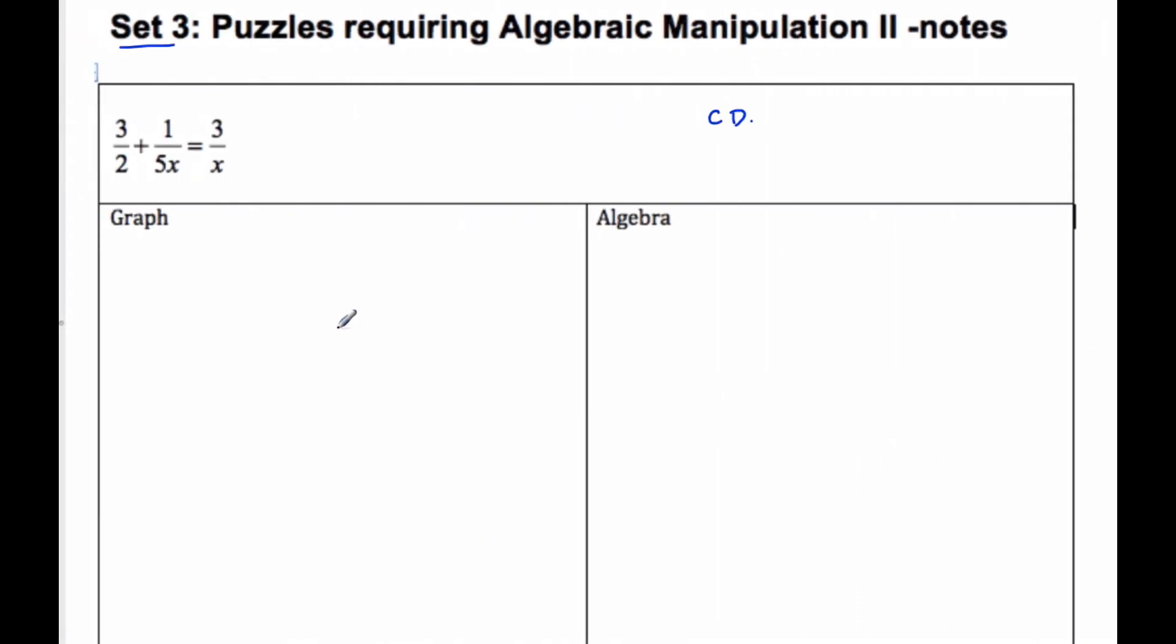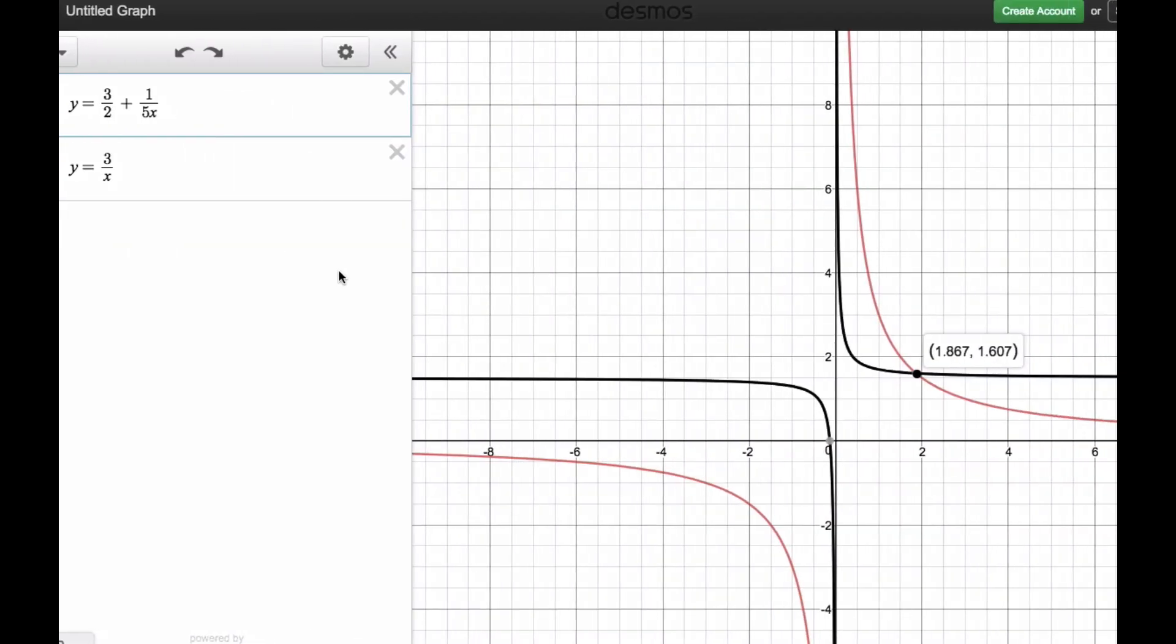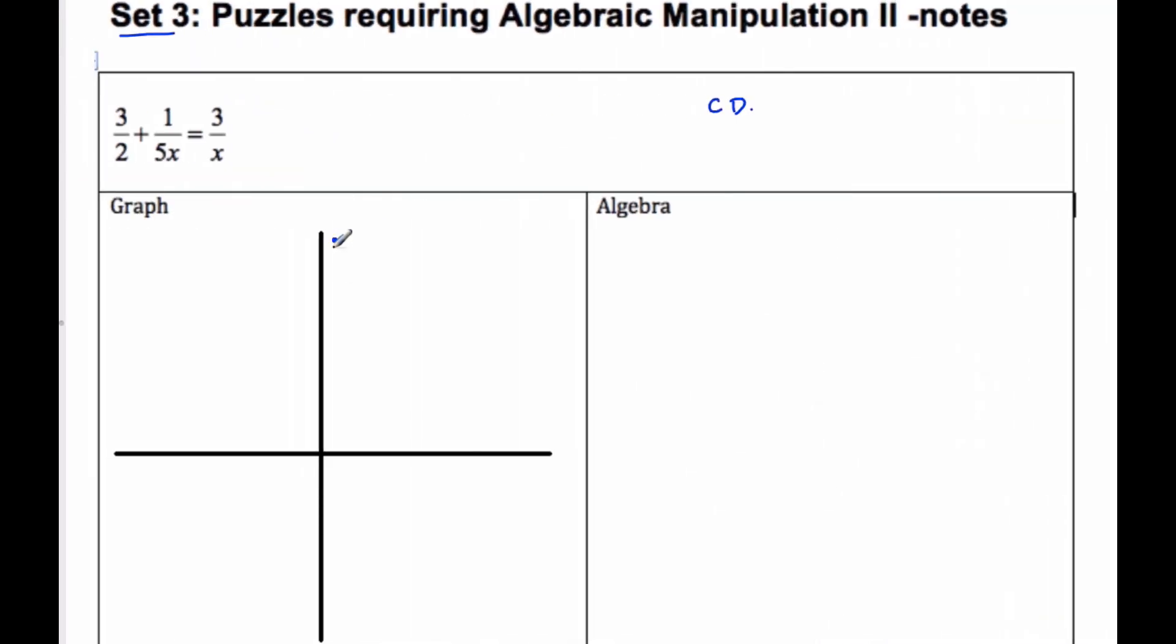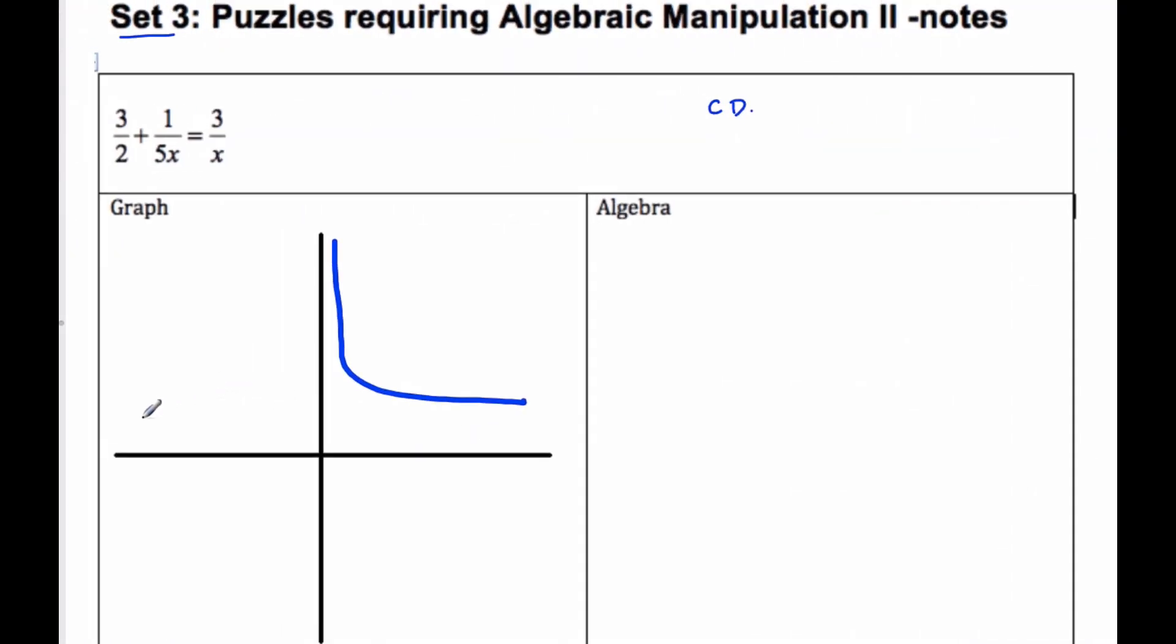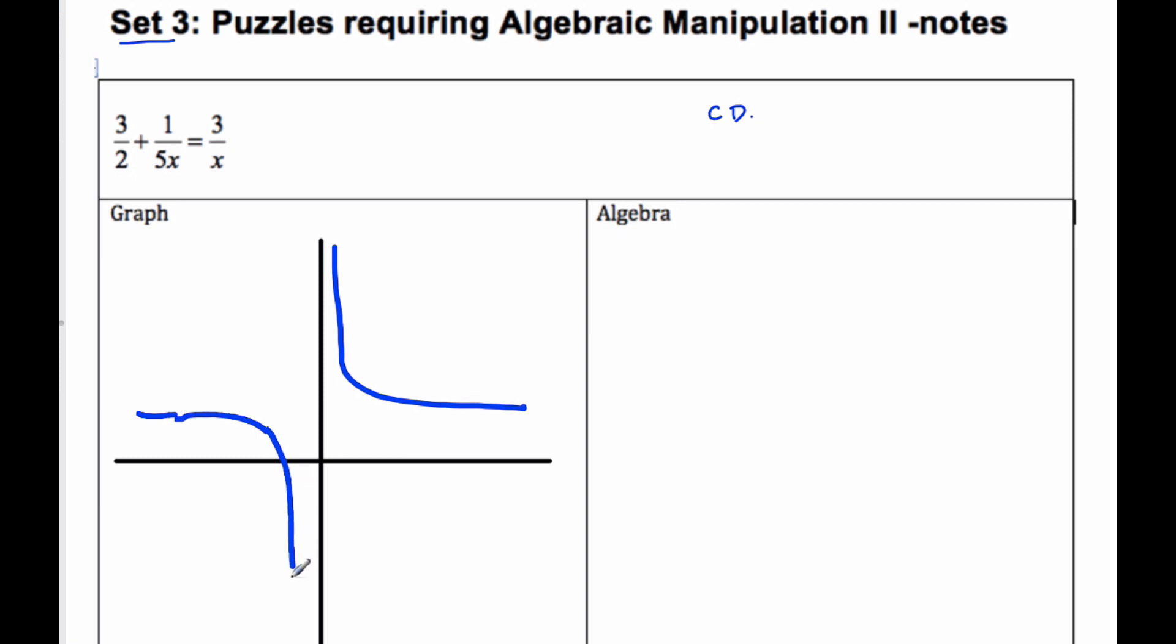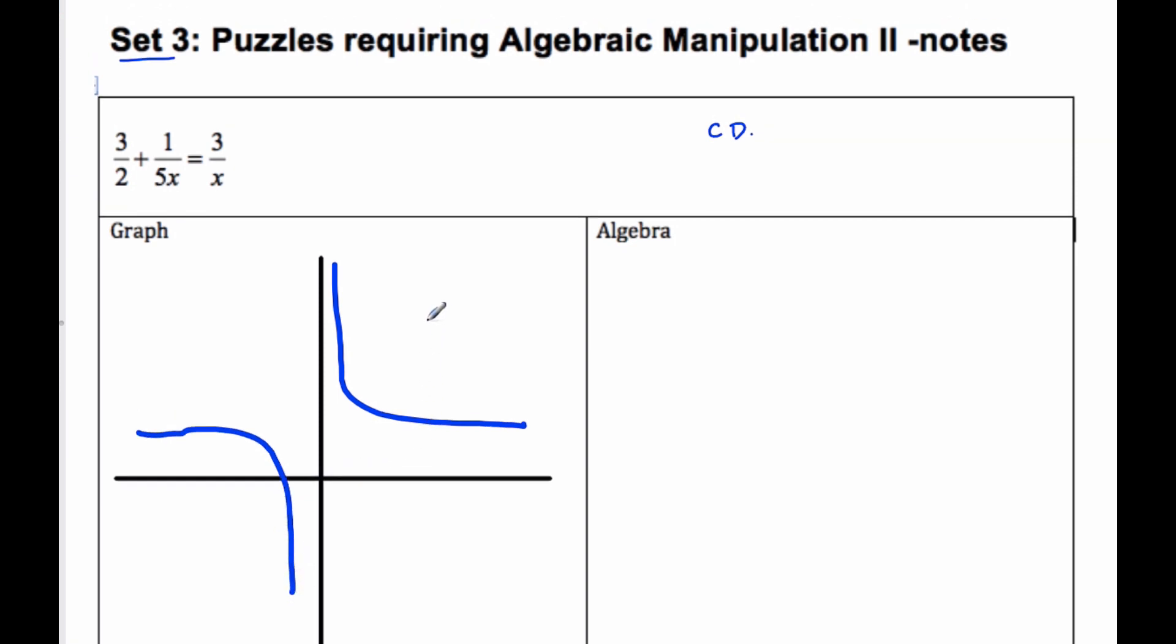And so if I'm going to graph this, here's what I'm going to try and do if I'm going to graph it without my computer. I'm going to make a quick sketch. See what it looks like again. Okay, so there's one that kind of goes like this, and there's one that kind of goes like this. And this here is y is equal to 3/2 plus 1 over 5x.